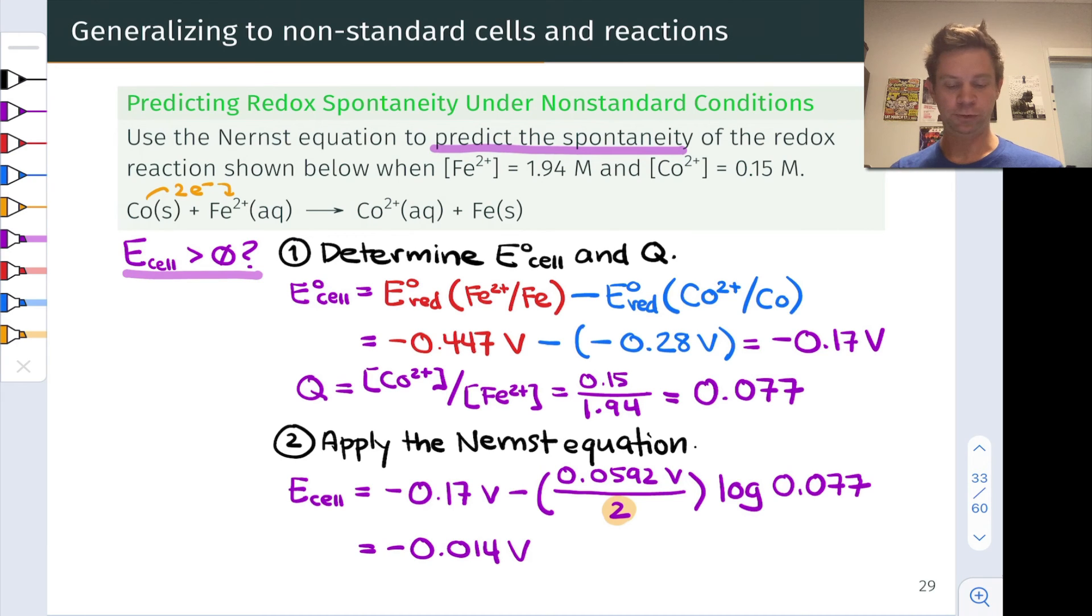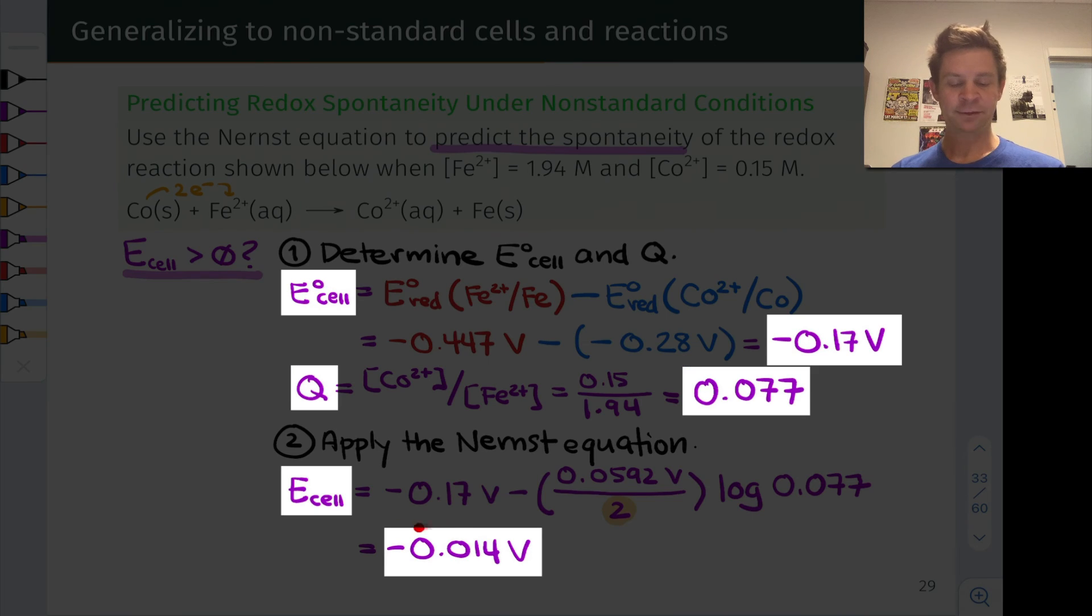This comes out to -0.014 volts. So notice that the value of Q, which was quite a bit less than 1, has pushed the cell potential less negative, has made the redox reaction a little bit more spontaneous, or less non-spontaneous.